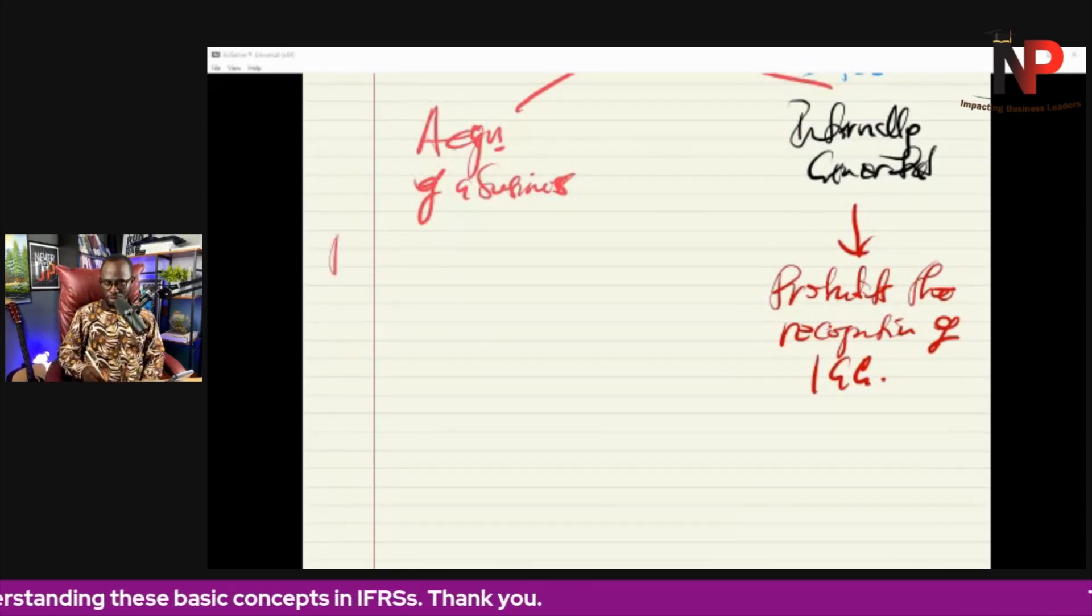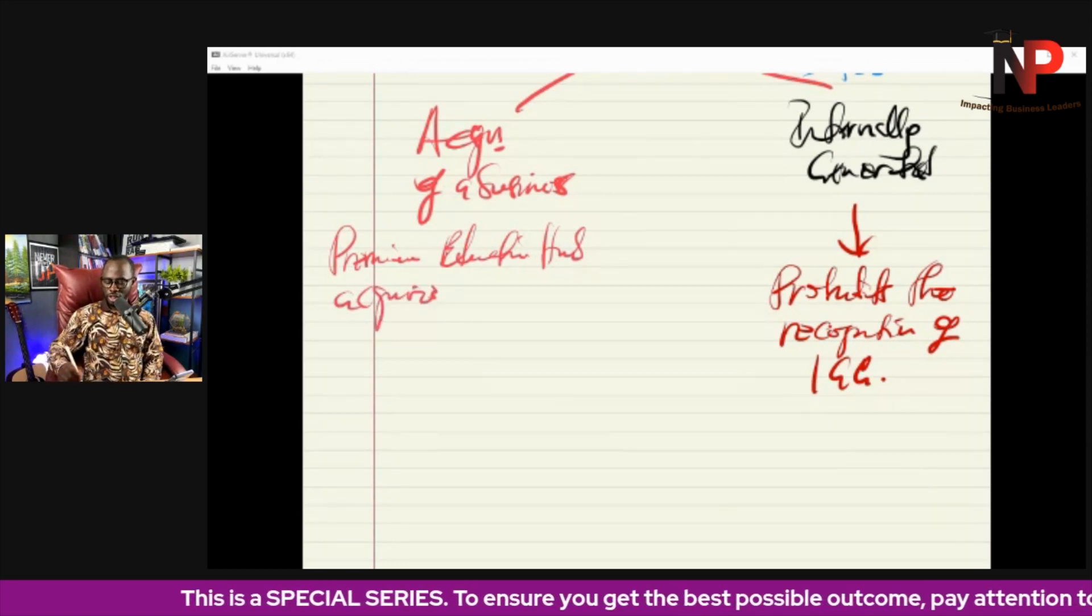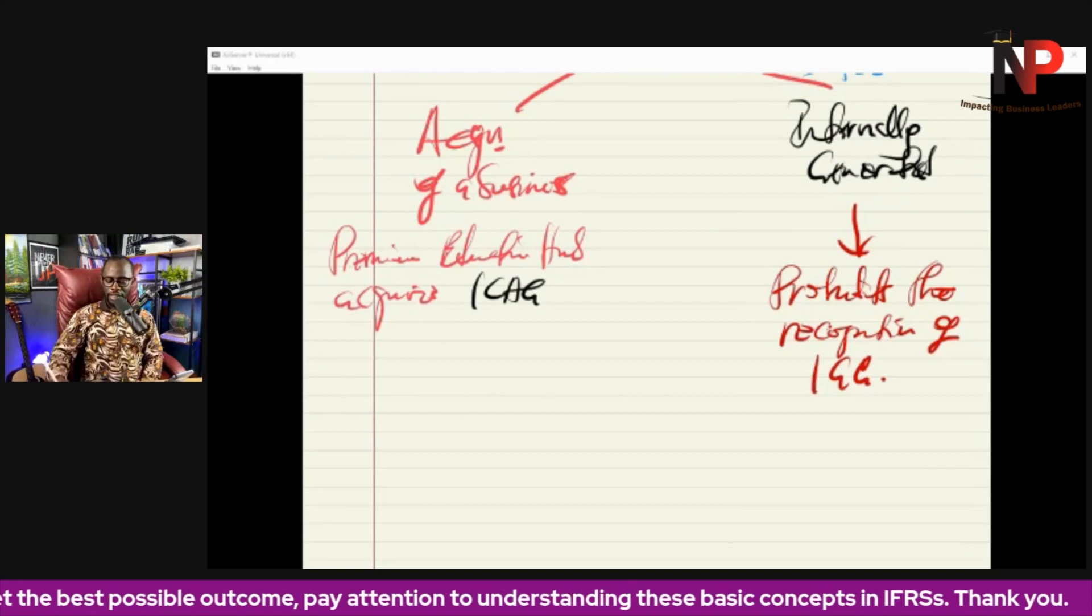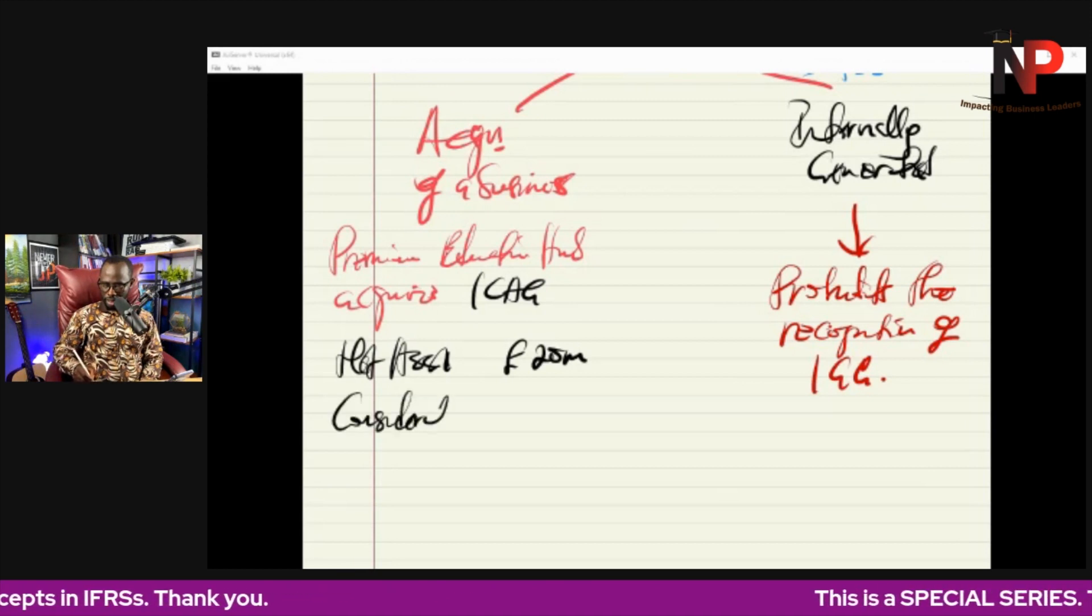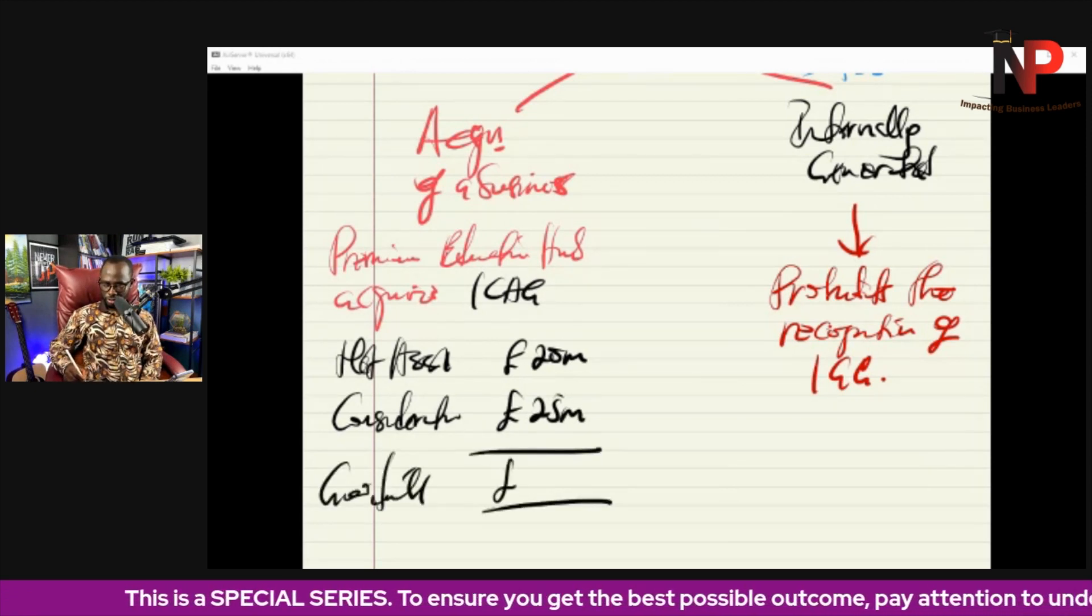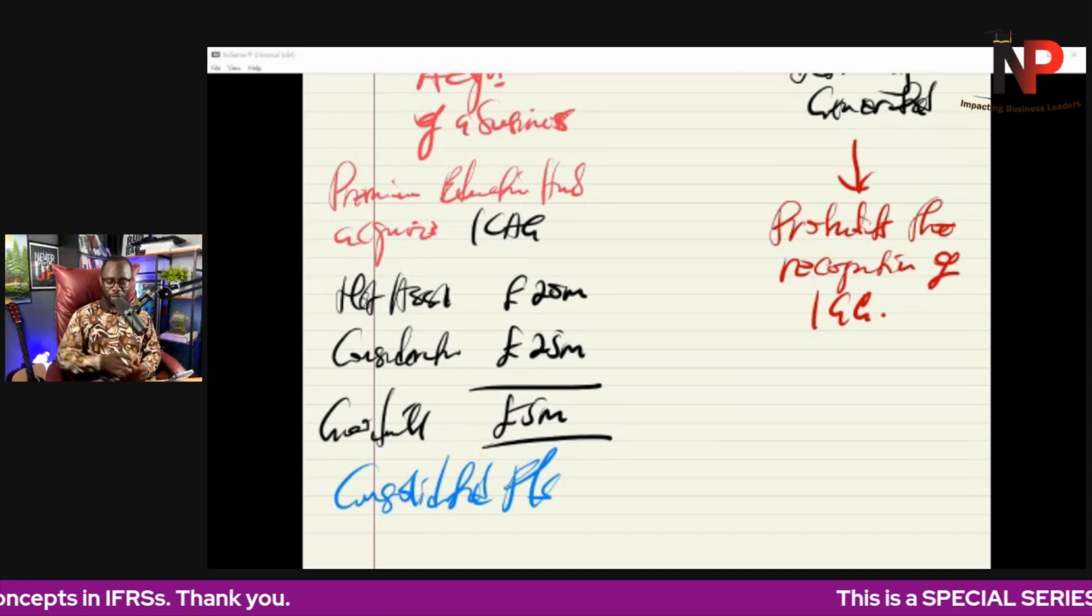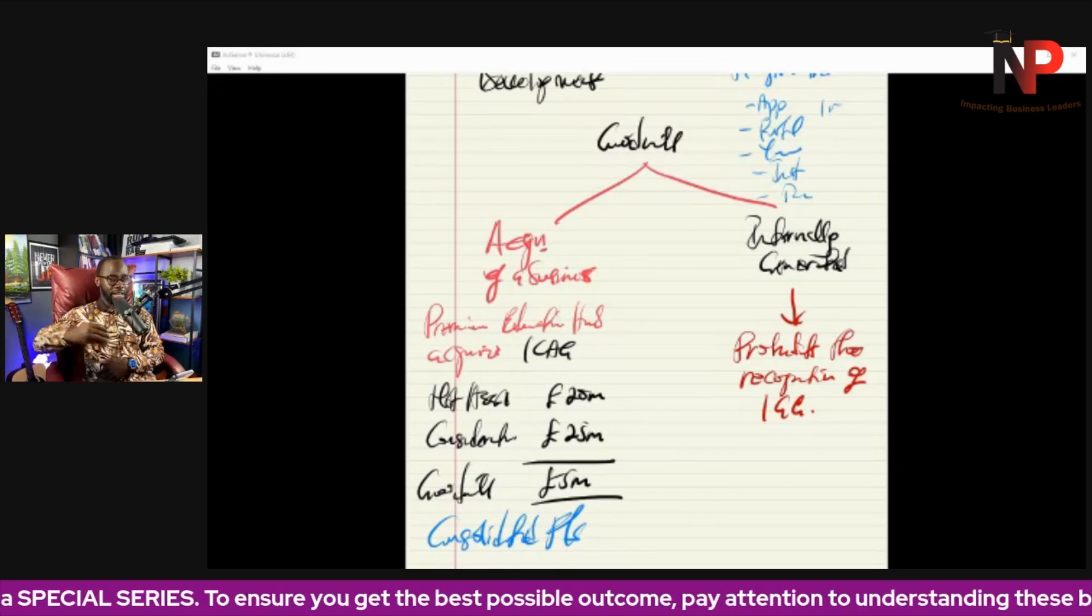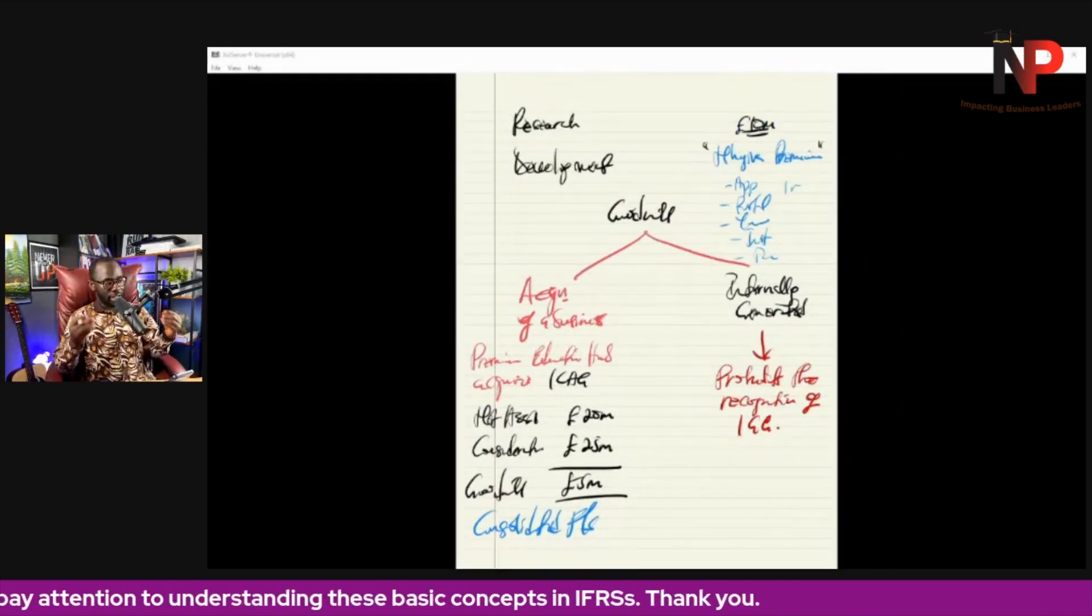However, if our company Premium Education Hub goes and acquires another company, maybe another educational institute, maybe the ICAG, just an example. And the net assets of ICAG is 20 million, but then the consideration, how much we paid in the deal is 25 million, then the excess amount is called goodwill at acquisition, 5 million. That can be recognized in the consolidated financial statement when we are preparing the consolidated financial statement. So goodwill from acquisition can be recognized in the consolidated financial statements, but internally generated goodwill cannot be recognized.